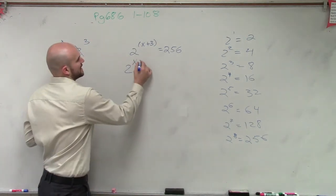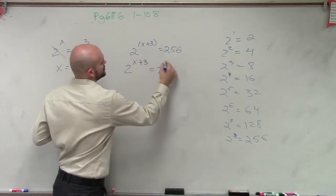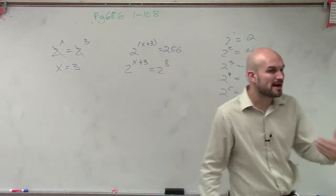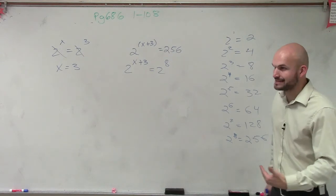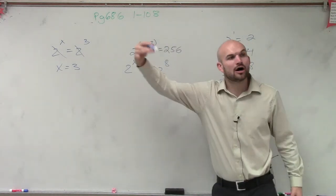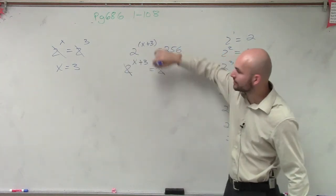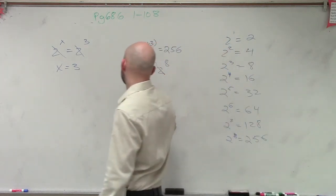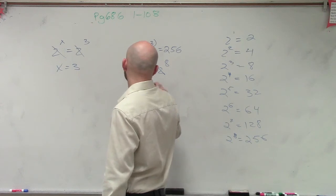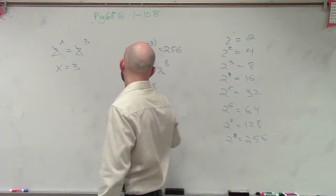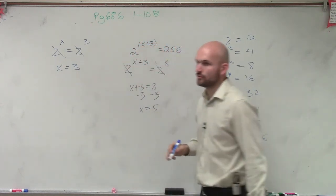So we could say 2 to the x plus 3 equals 2 to the eighth power. Now that my bases are exactly the same, I know my exponents have to also be exactly the same. So I'm just going to not worry about my bases and just say x plus 3 has to equal 8. Therefore, x equals 5.